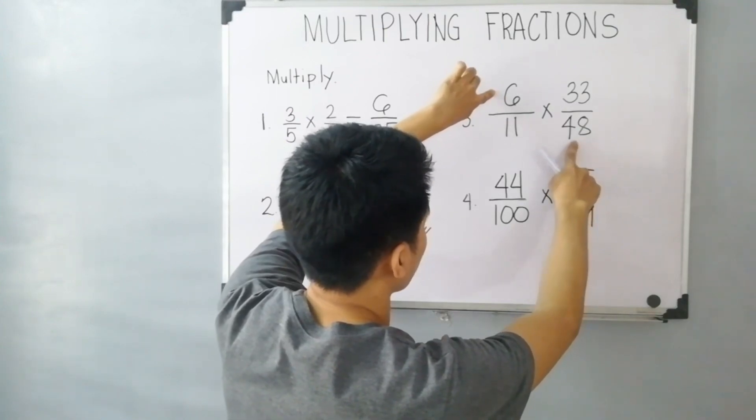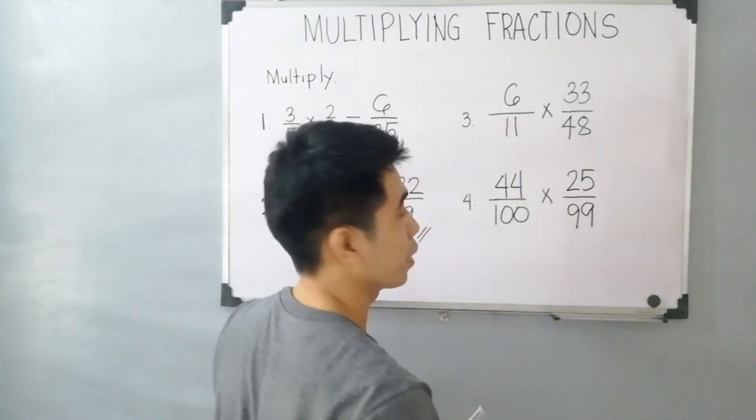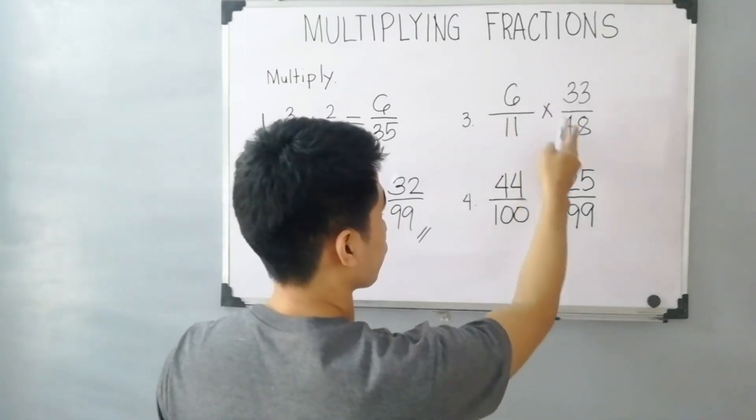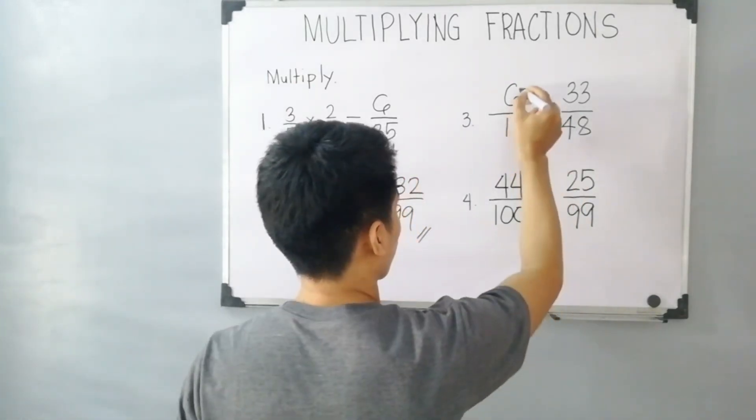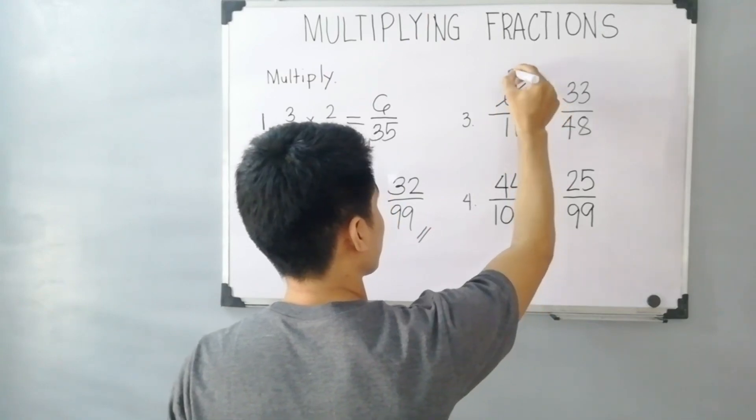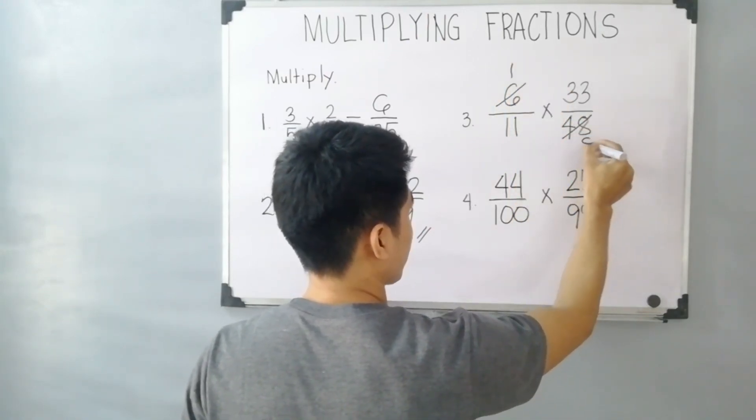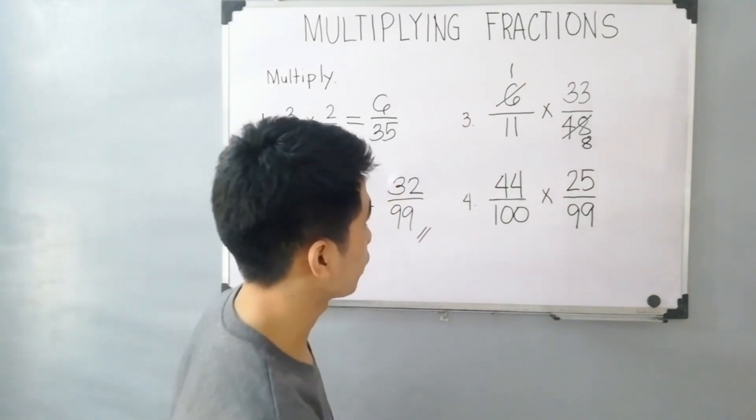We can simplify 48 and 6. We have greatest common factor of 6 since 6 and 48 are divisible by 6. This is 1. 48 divided by 6, this is 8.